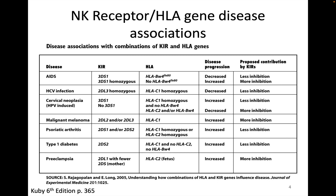The combination of particular NK receptors, like the KIRs shown in this table, along with certain HLA types, has a particular association with a number of different disease states. You can see this with infectious diseases like AIDS and hepatitis C virus, some tumors, cervical neoplasia, malignant melanoma, psoriatic arthritis, type 1 diabetes, and also preeclampsia — a pregnancy complication you may not have thought of as immune related.